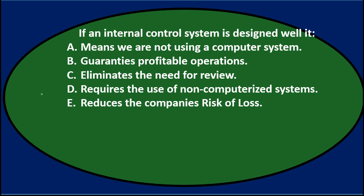Next question: If an internal control system is designed well, it — A. Means we are not using a computer system. B. Guarantees profitable operations. C. Eliminates the need for review. D. Requires the use of non-computerized systems. Or E. Reduces the company's risk of loss.